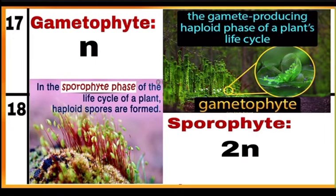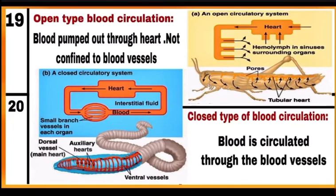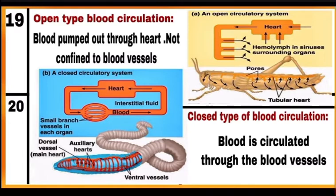Gametophyte: it is the gamete-producing haploid phase having n number of chromosomes in a plant's life cycle. Sporophyte: it is the diploid phase of the plant life cycle having 2n number of chromosomes, and in this phase spores are formed. Open type of blood circulation: blood is pumped out through the heart but not confined to blood vessels — blood directly bathes the body organs. This is seen in insects, which belong to phylum Arthropoda. Closed type of blood circulation: blood is circulated through blood vessels, as seen in the earthworm, which belongs to phylum Annelida.